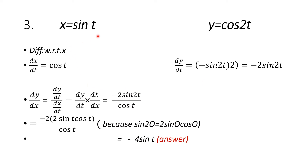Question number 3: x equals sin t and y equals cos 2t. Differentiating with respect to x — in the first case, dx by dt: the derivative of sin t is cos t. In the second case, dy by dt: the derivative of cos 2t is −sin 2t multiplied by the derivative of 2t, which is 2. So you get −2 sin 2t. Note that you cannot multiply this 2 by the 2t; the 2 comes at the beginning, giving minus 2 sin 2t.